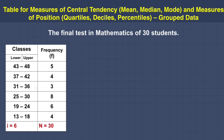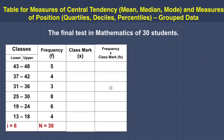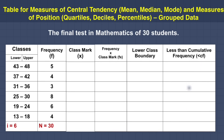Again, let us use the previous example: the final test in math of 30 students. This time we have to add the columns for class mark, frequency times class mark (fx), the lower class boundary, and the less than cumulative frequency.